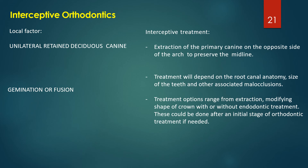For local factors: if you encounter a unilaterally retained deciduous canine, you can extract the primary canine on the opposite side of the arch to preserve the midline. For gemination or fusion of teeth, treatment depends on root canal anatomy, tooth size, and associated malocclusions. Treatment options range from extraction to modifying the shape of the crown, with or without endodontic treatment, and these can be done as an initial stage before or simultaneously with fixed appliance therapy.